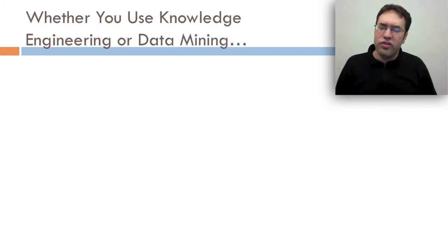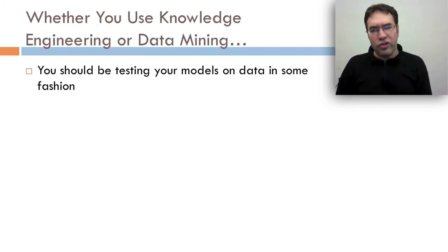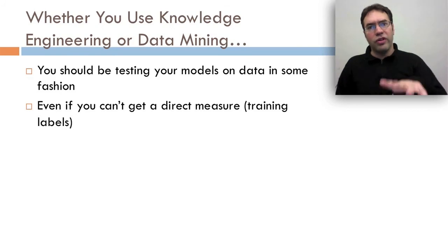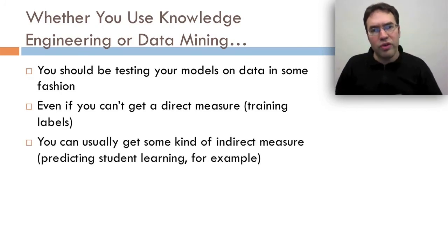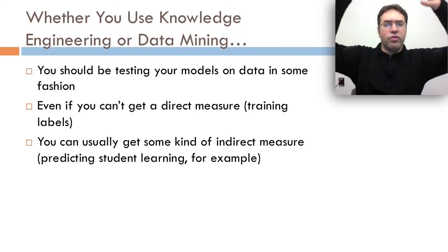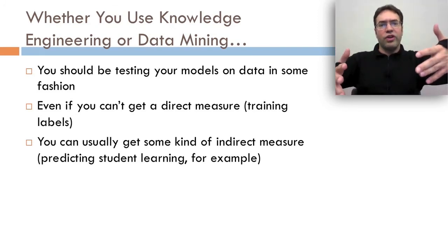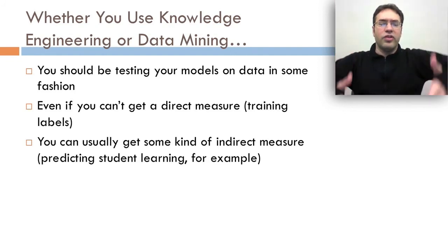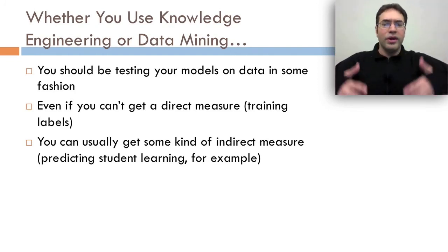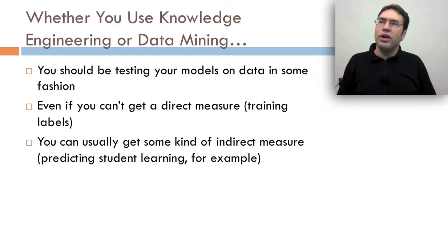Whether you use knowledge engineering or data mining, you should be testing your models on data in some fashion. You shouldn't just be throwing it out there and saying you're done. Even if you can't get a direct measure like training labels, you can usually get some sort of indirect measure, predicting student learning, for example. When you look at Aleven's help-seeking model, he had some direct measures. For example, he used some of our same field observations of gaming to try to test his model. But even beyond that, he had measures of learning and could show that things like help avoidance and help abuse actually correlated to learning outcomes in valuable ways.